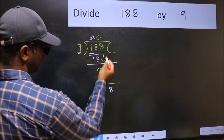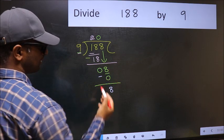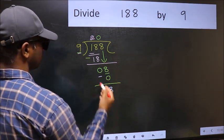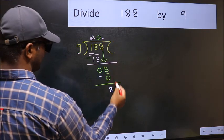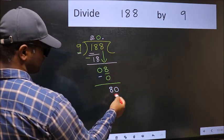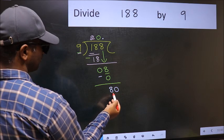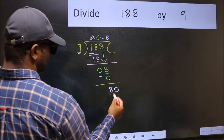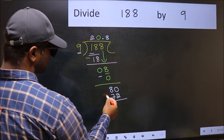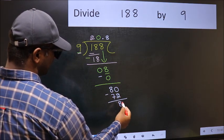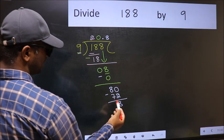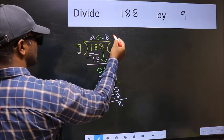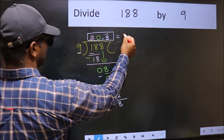Here, we did not bring any number down, and 8 is smaller than 9. So now you can put a dot and take 0, giving 80. The number close to 80 in the 9 table is 72, which is 9 times 8. Now subtract: we get 8 again. That means we get a repeating bar on this number. So this is our quotient.